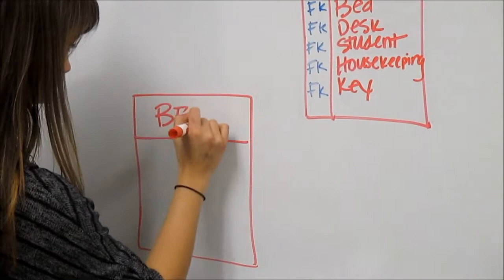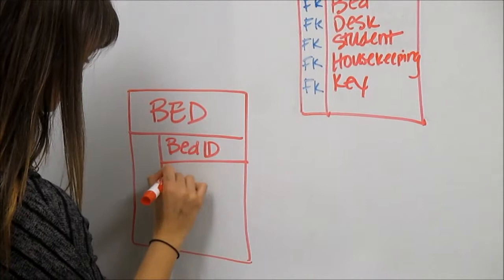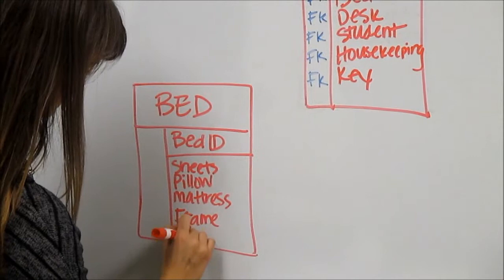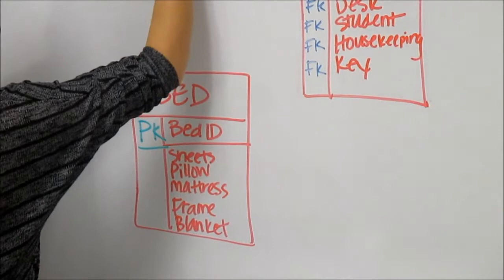We next move to our entity of bed, identify the primary key, bed ID, and under the primary key, list out the attributes. In this case, we used sheets, pillow, mattress, frame, and blanket. As we did before, next identify the primary key with a PK to the left of the primary key.